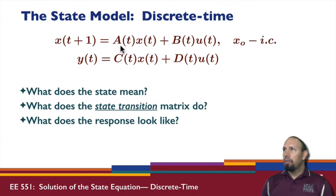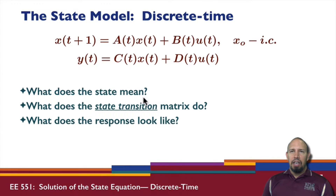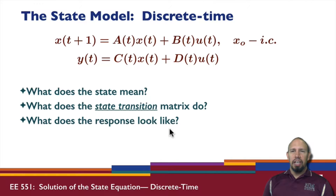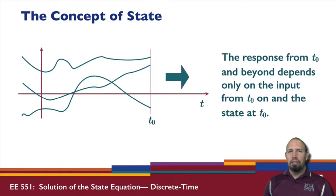Time-varying means that the matrices A, B, C, and D are all functions explicitly of time. So some important questions are: what does the state actually mean, what does the state transition matrix do, and what does the response look like? These are important questions as we go into this discussion of the state model.